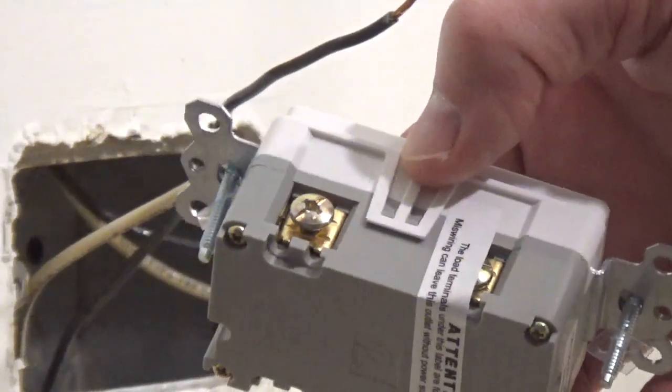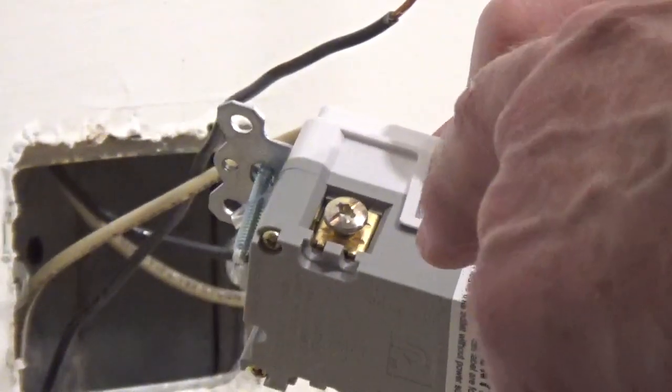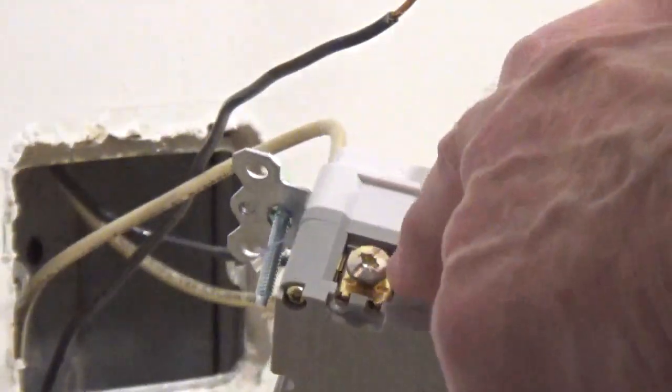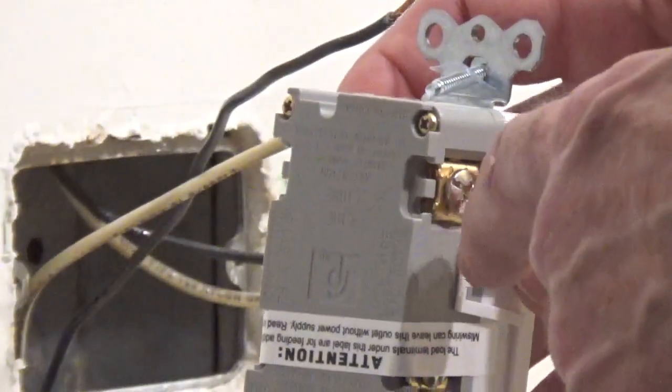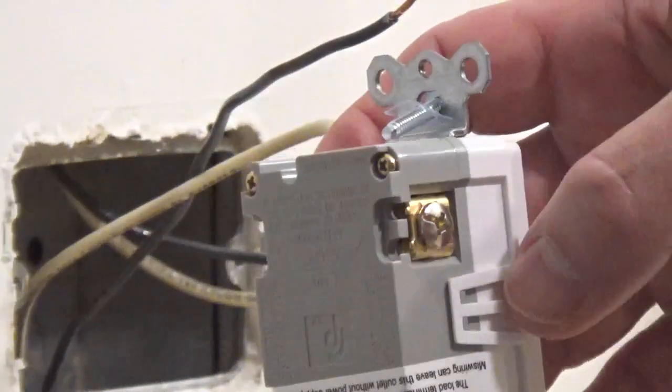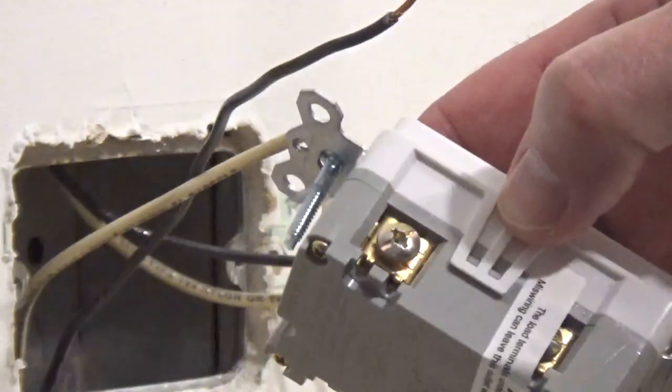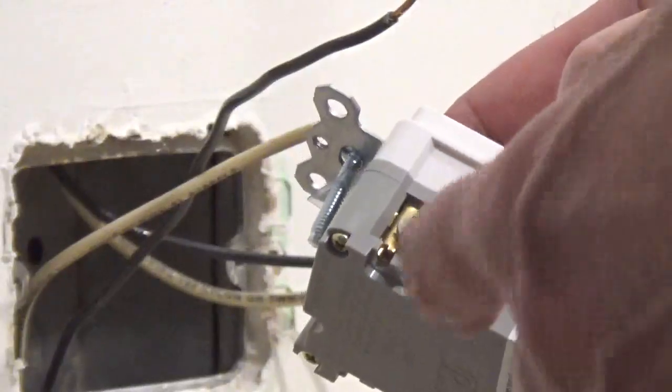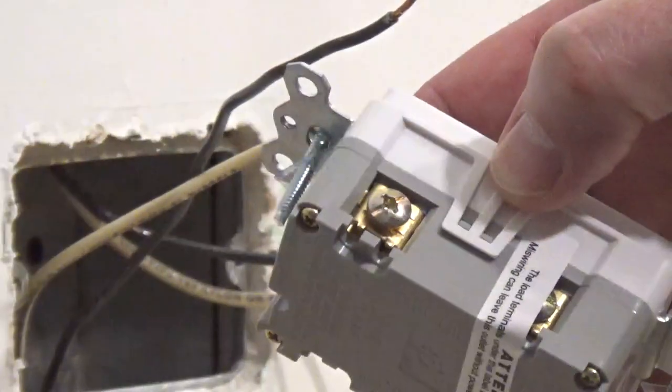This GFCI has two different ways you can wire it. You can put a loop on your wire and wrap it clockwise under the screw and tighten it. Or you can slide the wire straight under this plate and then tighten it down. And this is good if you have stranded wire to slide it underneath that plate.